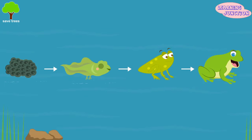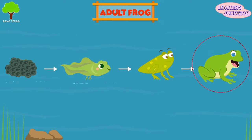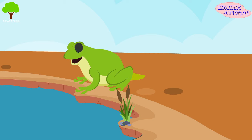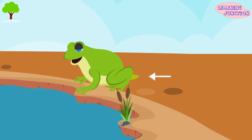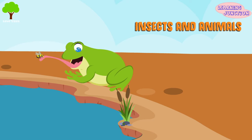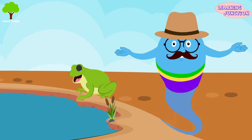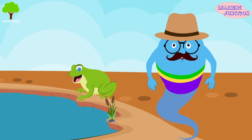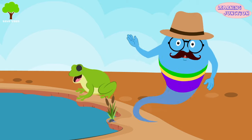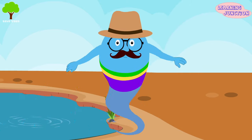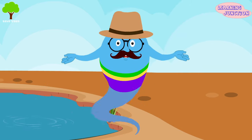Stage four: adult frog. It's the final stage of the life cycle of a frog. By between 12 to 16 weeks, the frog's tail disappears completely and it starts to eat insects and small animals. The mother frog returns to the water to lay eggs and the life cycle of a frog begins again.